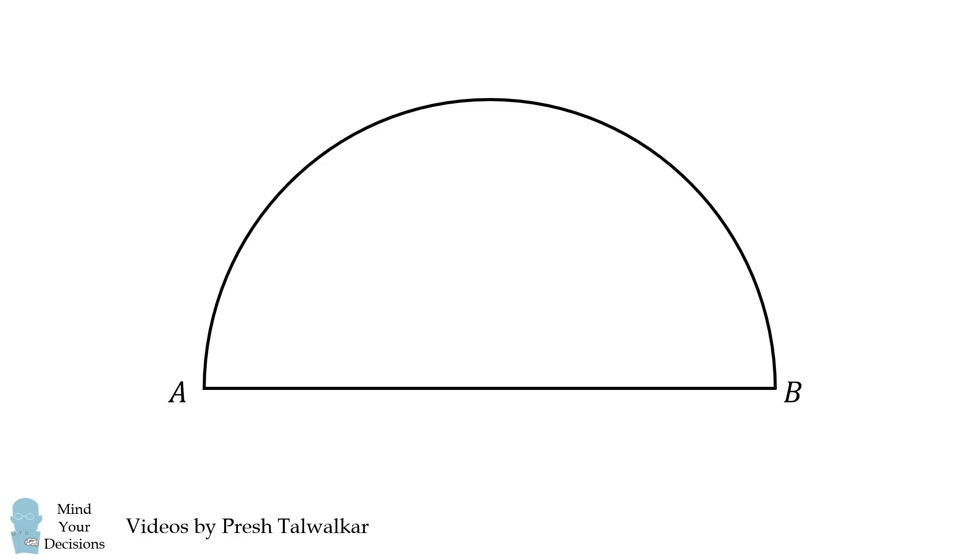AB is the diameter of a circle. A line zigzags between the diameter and the circle in such a way that it starts at point A and ends at point B.